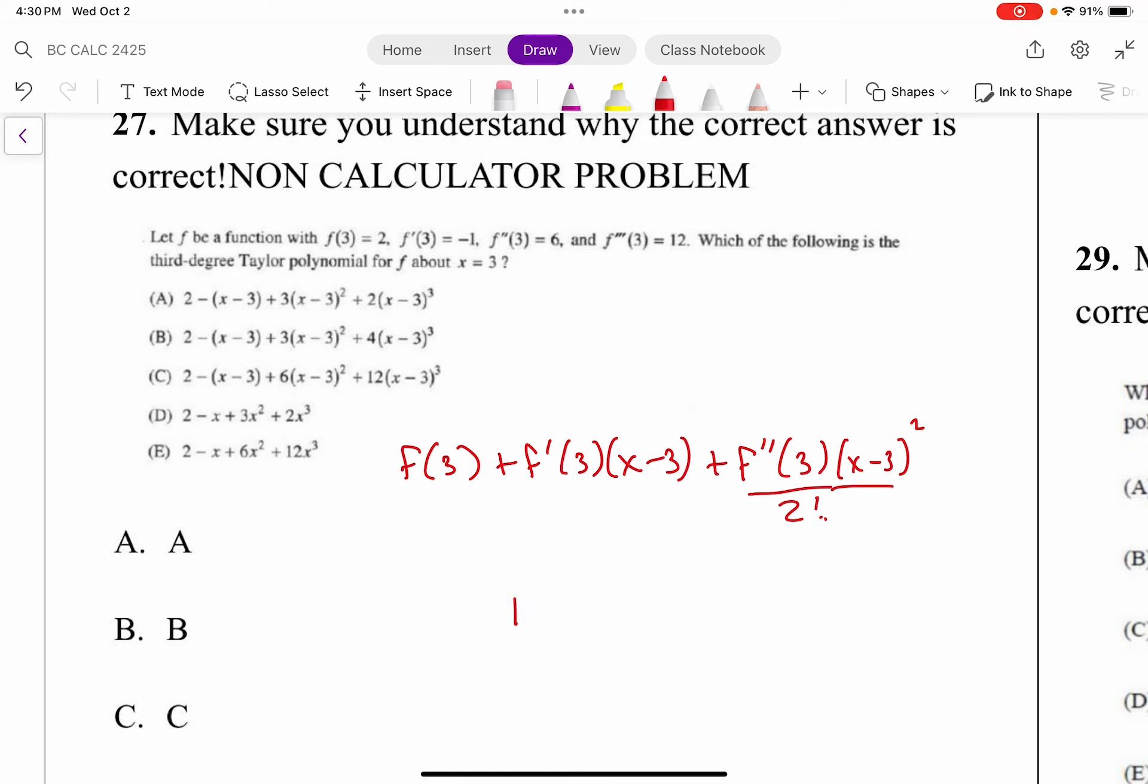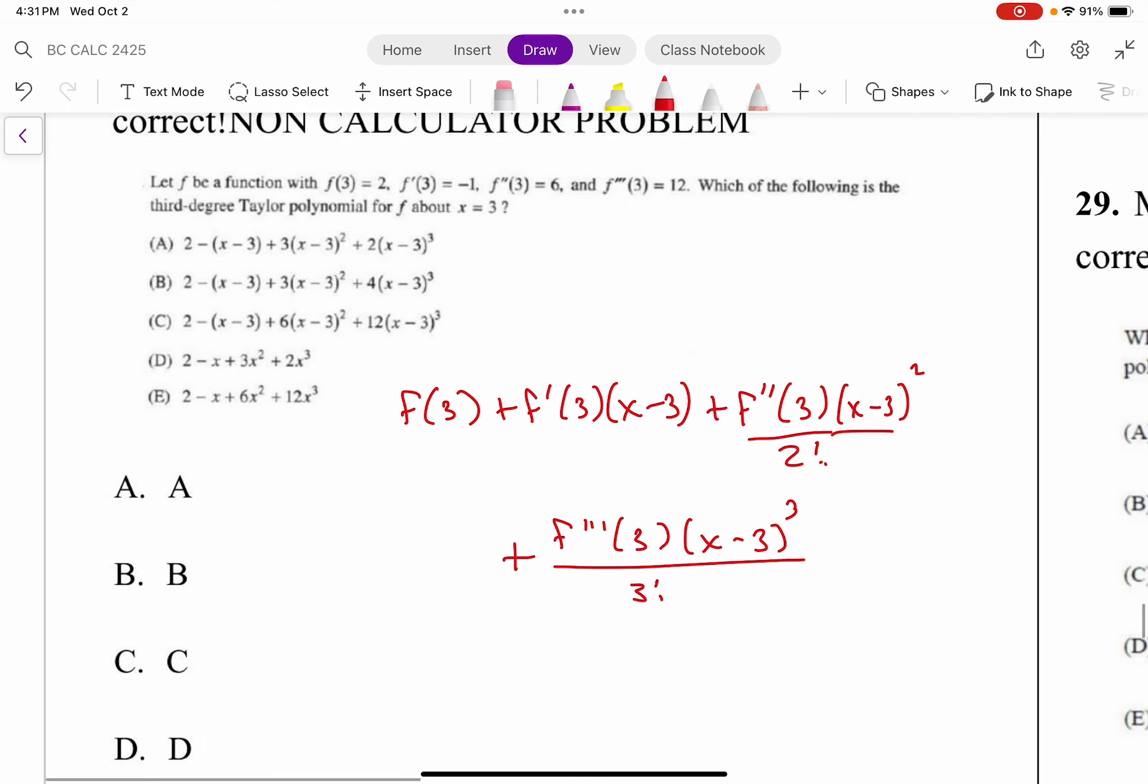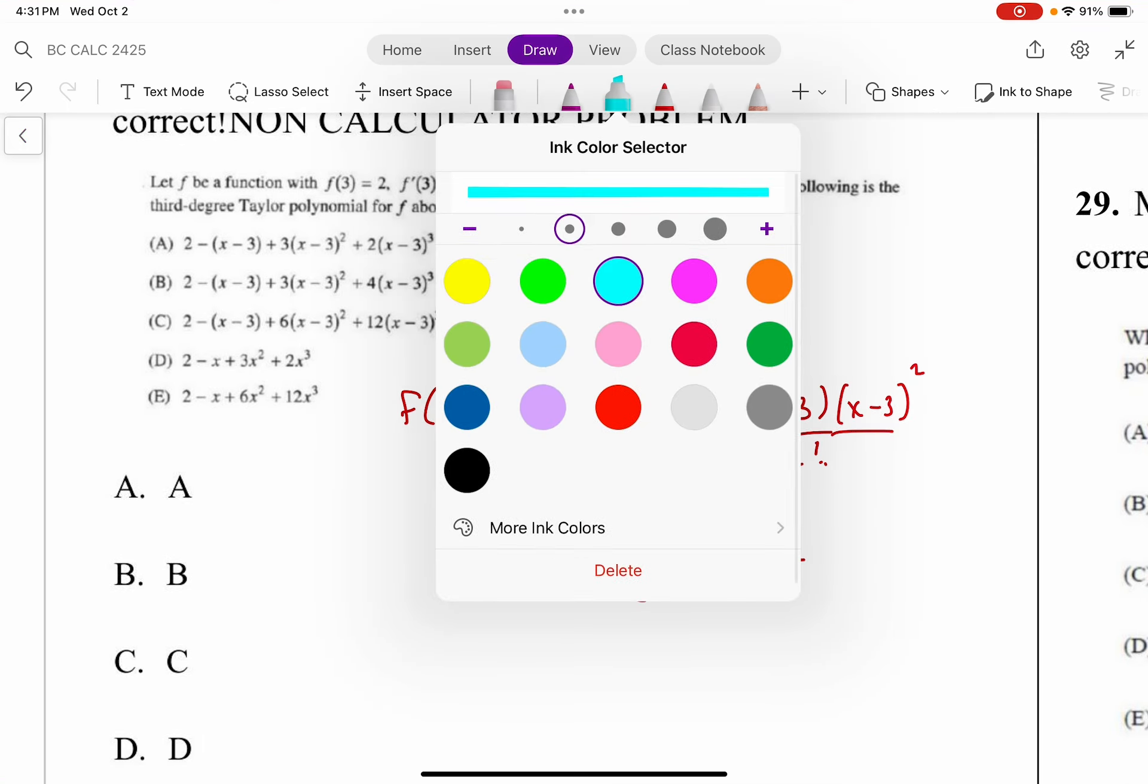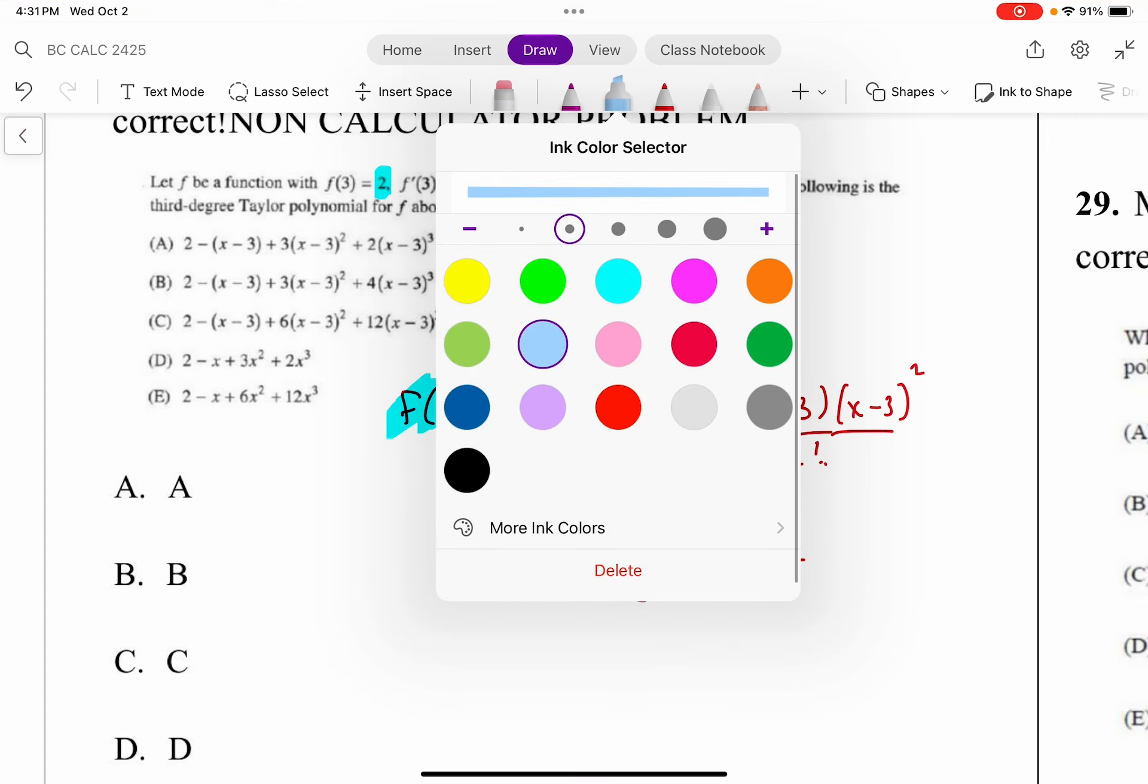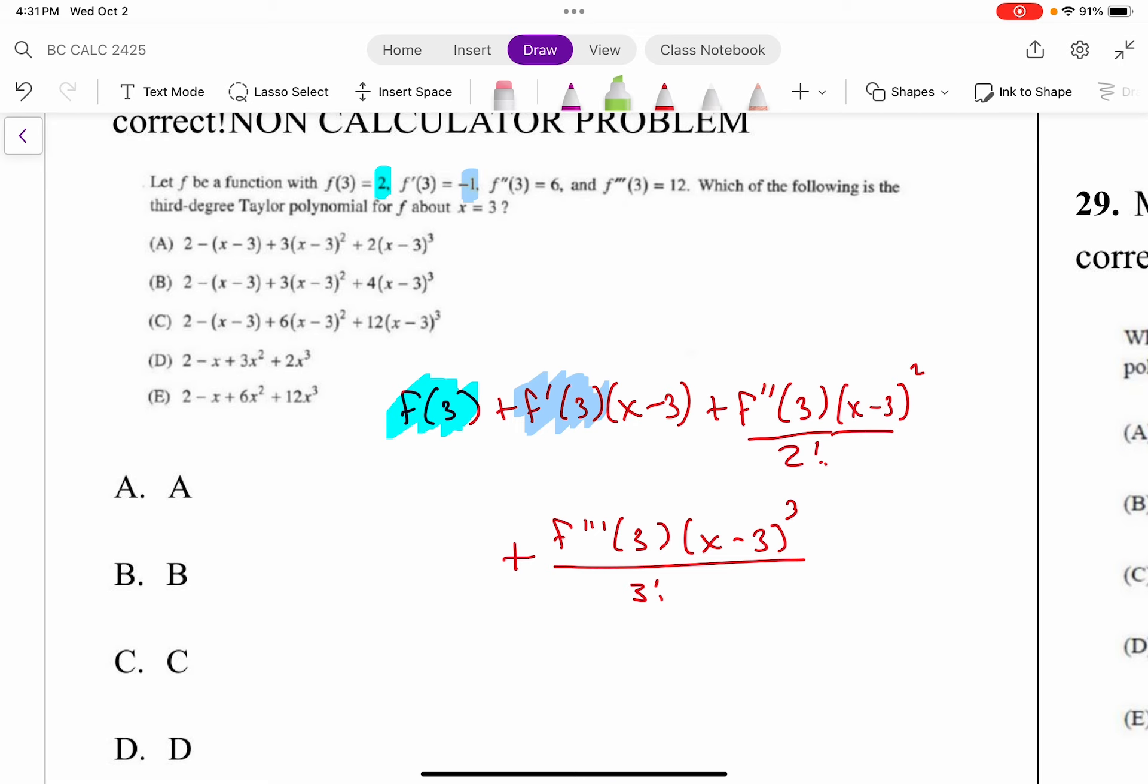Running out of room, so I'll go down here plus the third derivative at 3, (x-3)³ divided by 3 factorial. And now you're just going to take these numbers, so that's going to become a 2, that's going to become a -1, that's going to become a 6, and this is going to become a 12.